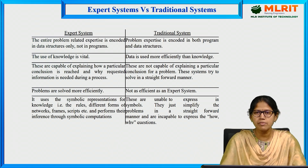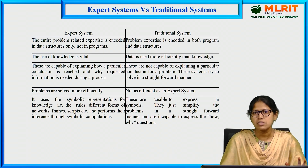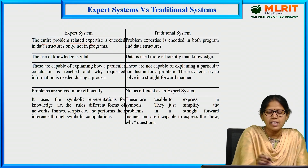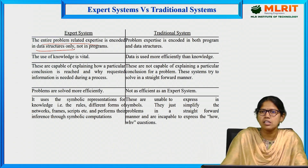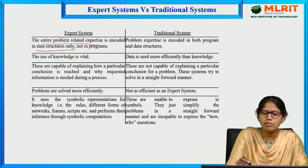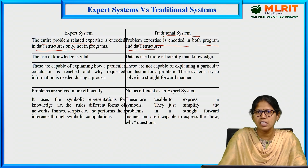In today's session, we will see the differences between expert systems and traditional systems. The first difference: in expert systems, the entire problem-related expertise is encoded in the form of data structures only, not in the programs. Whereas in the traditional system, the problem expertise is encoded in both the programs as well as in the data structures.